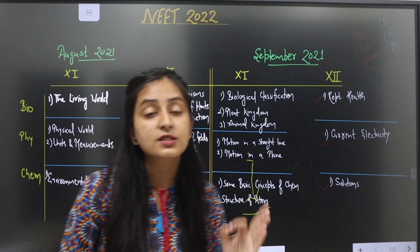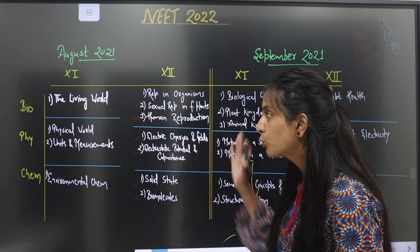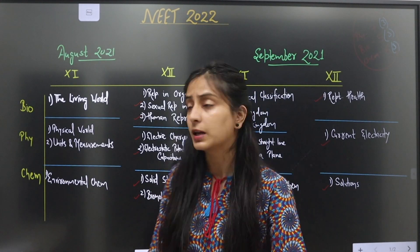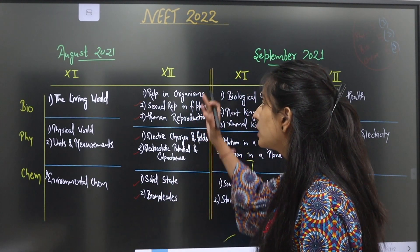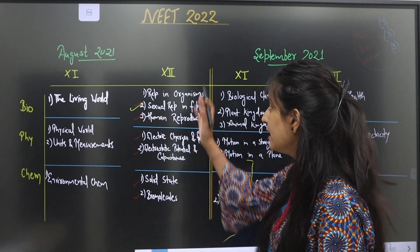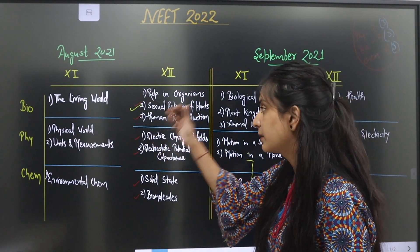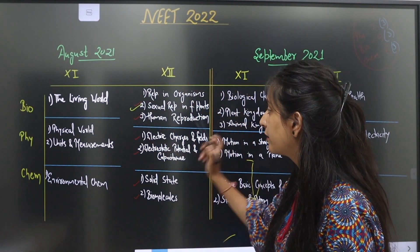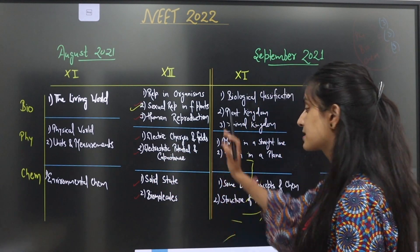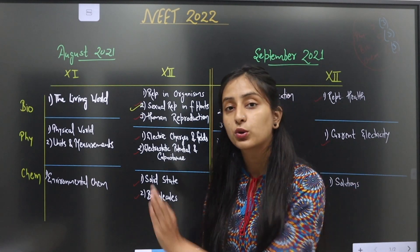If you followed my August and September targets, then in CBC Class 12 Term 1, you will have already covered: Biology Class 12 — Sexual Reproduction in Flowering Plants and Human Reproduction from August. Physics — Electric Charges and Fields, Electrostatic Potential, and Capacitance covered. And Chemistry — Solid State and Biomolecules, which you did in August.